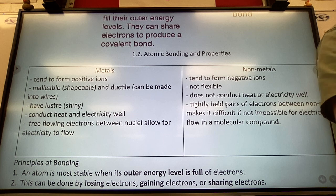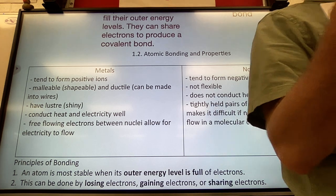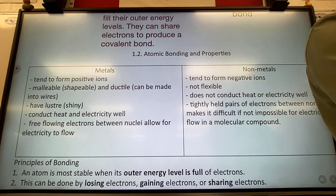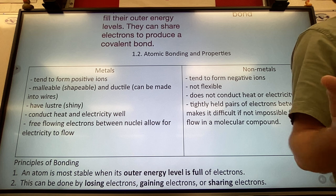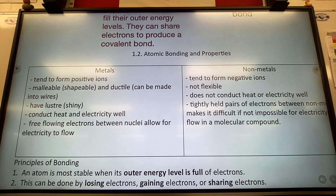Looking at the periodic table: metals are on the left side, separated from non-metals by the staircase, which is bolded. Metals tend to form positive ions — you can see positive charges all over the left side. At the staircase the crossover happens, and everything past it is negative. The elements on the staircase have a special name.